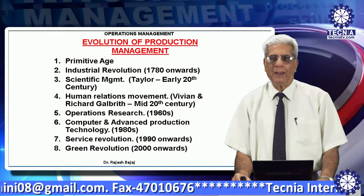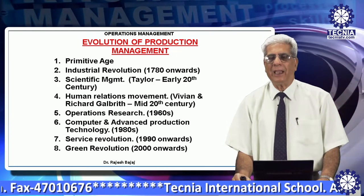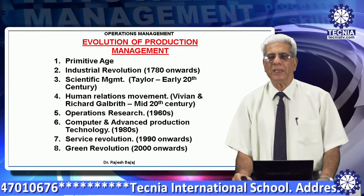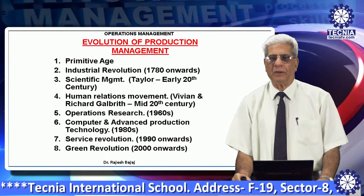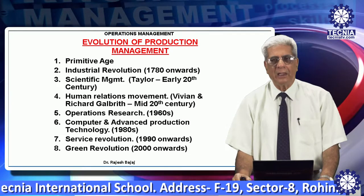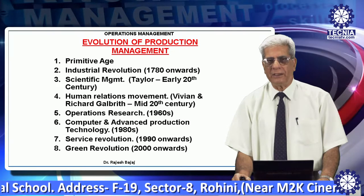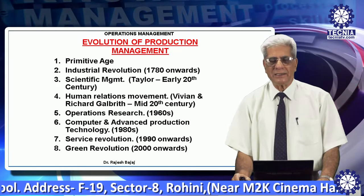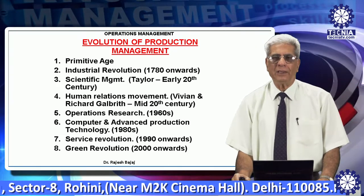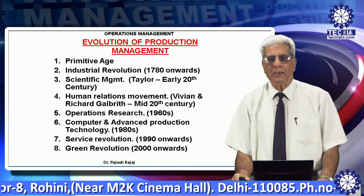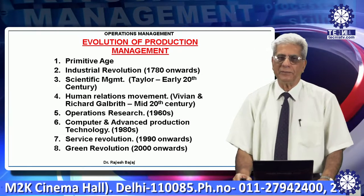Over a period of time, when the population started increasing, demands started going up. Those people in the hutments started keeping apprentices. With a single expert and two or three apprentices learning skills and producing at the same time, four people working would be able to produce twice what a single person could. This continued for a fairly long period until the end of the 18th century when we had the era of the industrial revolution.